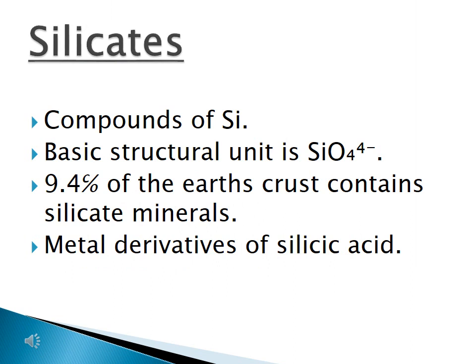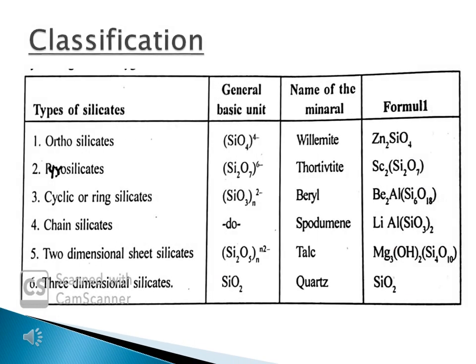Let us now move to the next topic: silicates. What are silicates? Silicates are compounds of silicon which contain the basic structural unit SiO4⁴⁻. These are the metal derivatives of silicic acid, H4SiO4. About 9.4% of the earth's crust contains silicate minerals. Let us see the classification of silicates.